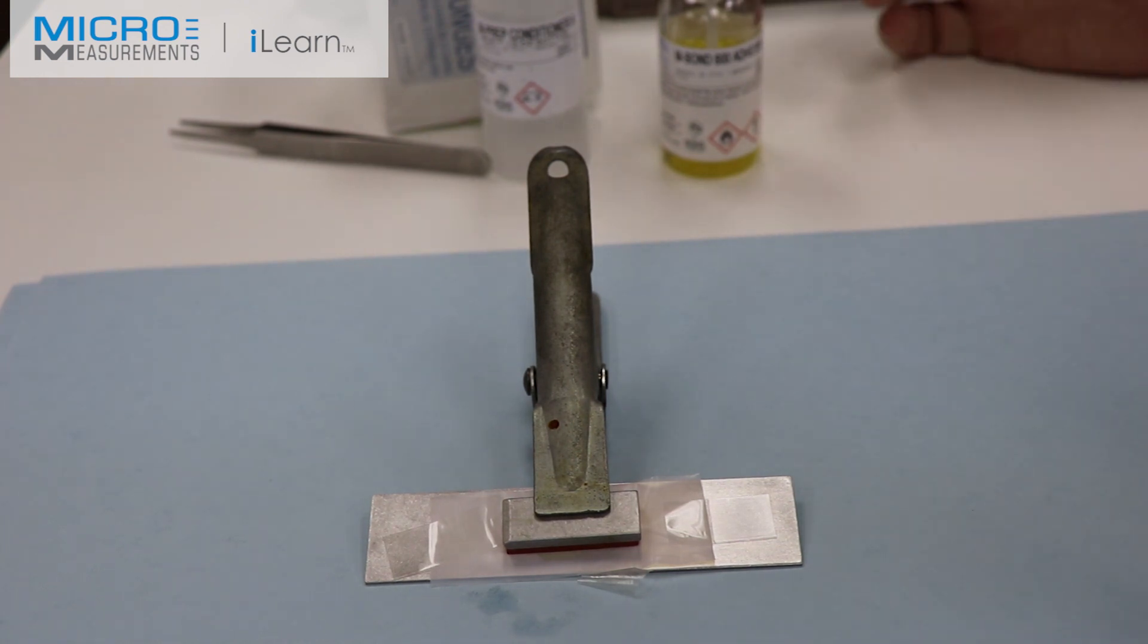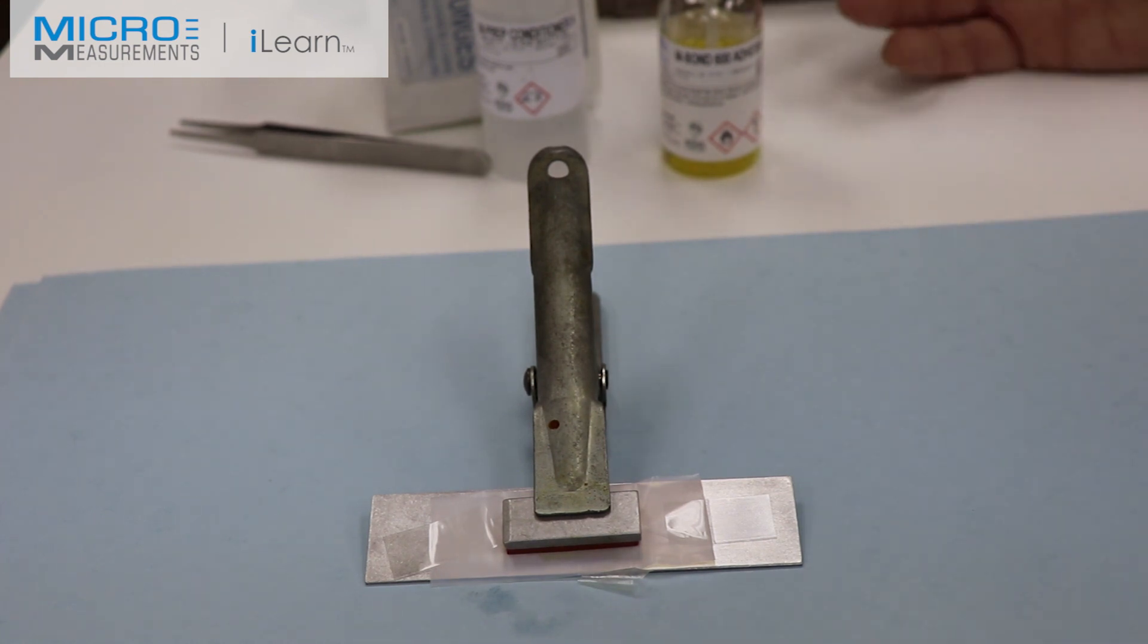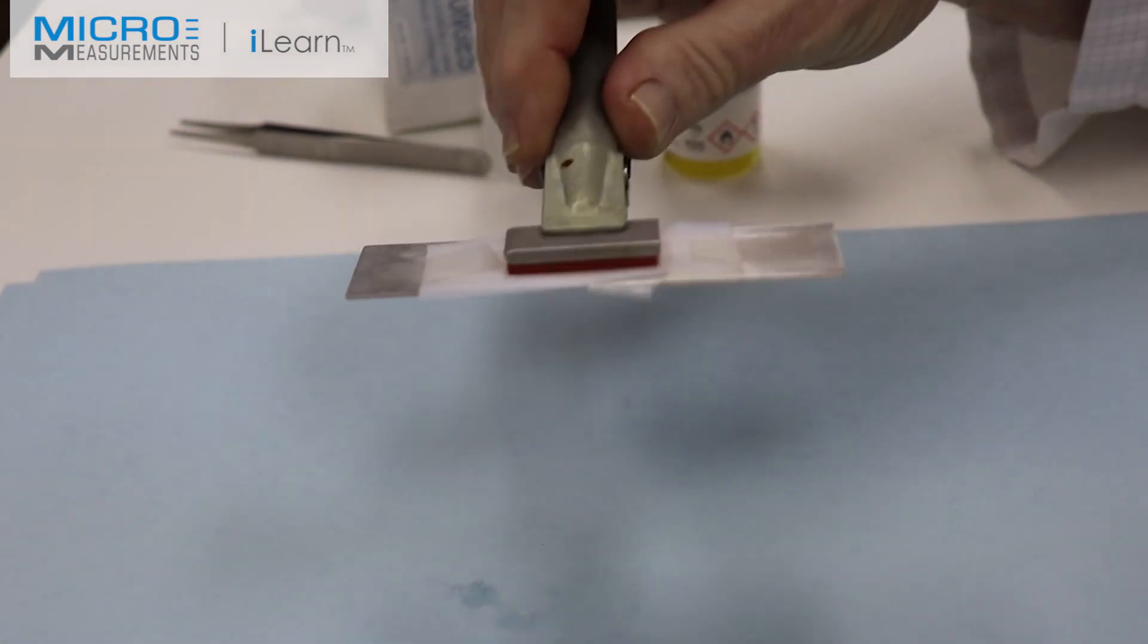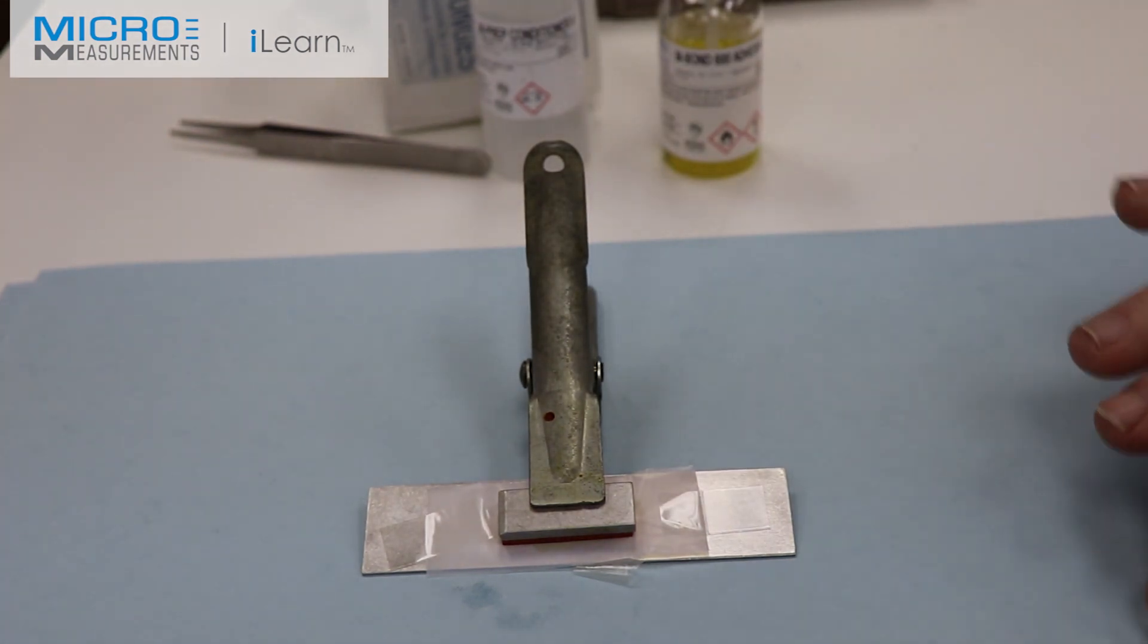Also, you should note that the ramp rate should be somewhere between 5 and 20 degrees Fahrenheit per minute. If it's too slow, you'll have a thick or uneven bond line. If it's too fast, it will cure around the edges and trap solvents and have voids or discontinuous behavior. If you have a massive part, you might have to put it into a warm oven. If you've got a thin part like this piece of aluminum, you need to start with a cool oven and be sure the ramp rate is again between that 5 and 20 degrees Fahrenheit.